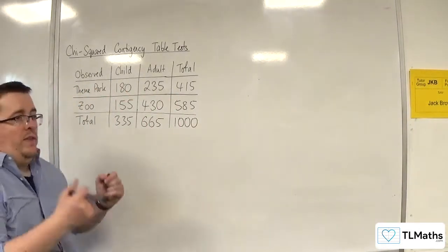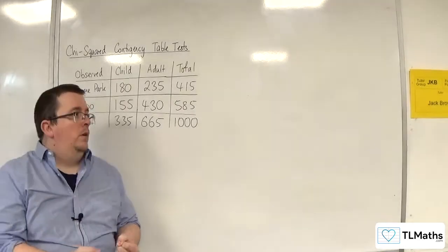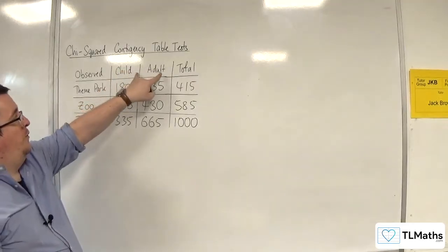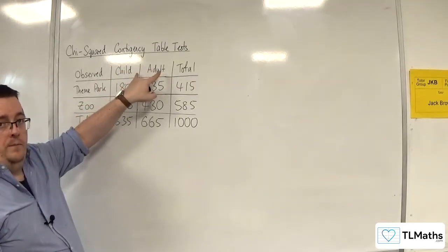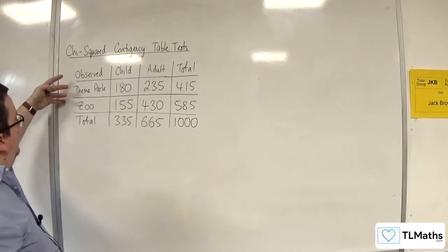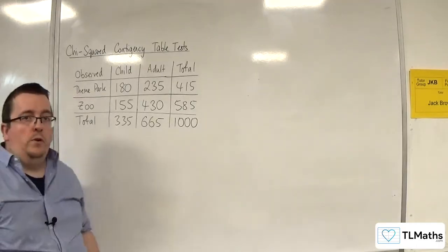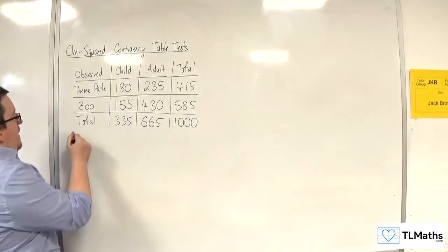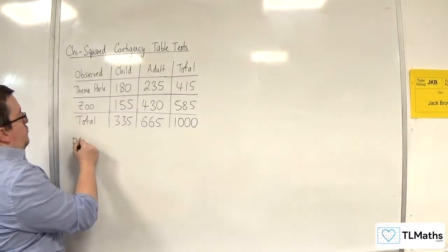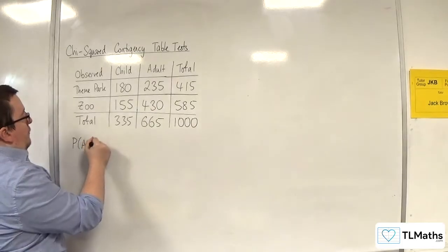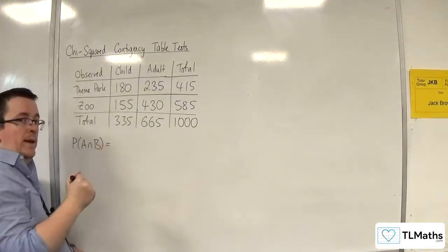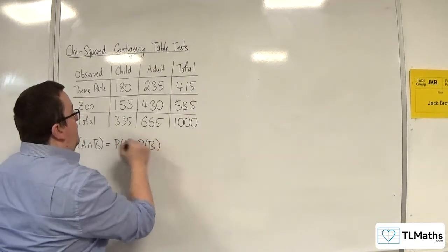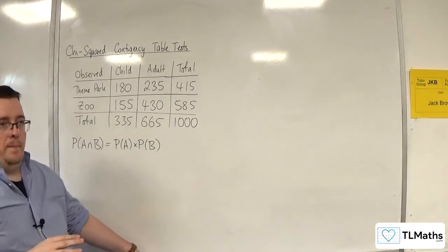Now, what we then do is we assume that the type of ticket, so the type of ticket either child or adult, and the attraction, theme park or zoo, are independent of one another. So remember that if two events are independent, the probability of A intersection B is the same as the probability of A times the probability of B, if they are independent.